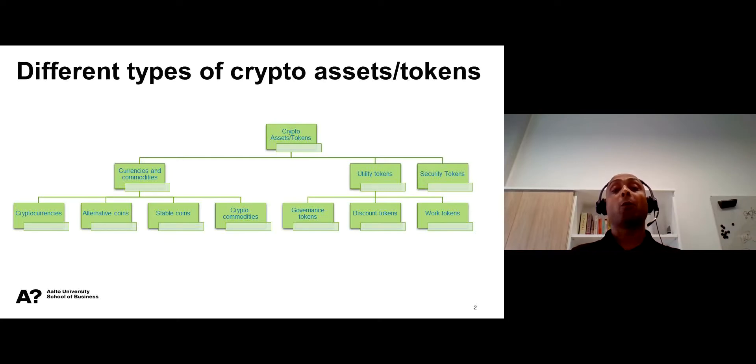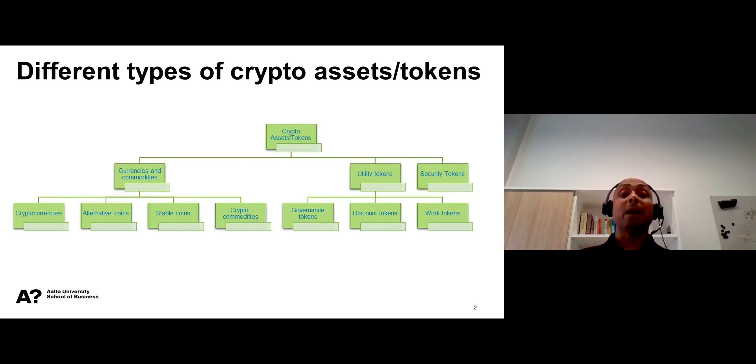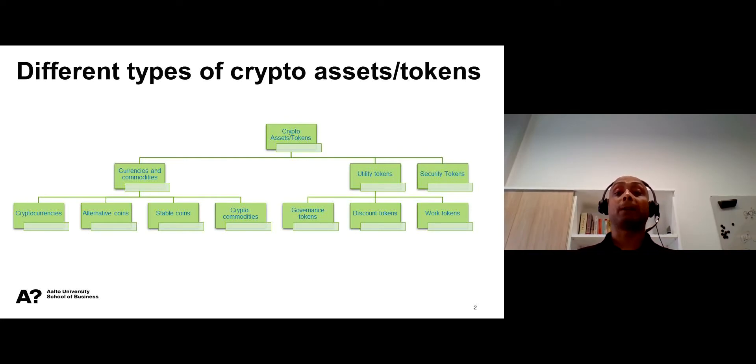A notable example of a crypto-asset-backed stablecoin is MakerDAO's DAI. While DAI is pegged to the USD, it is backed by a basket reserve of crypto assets.